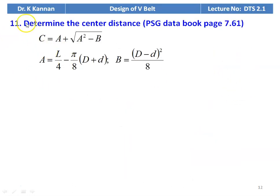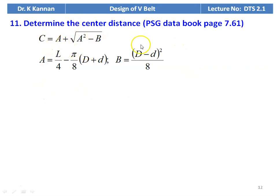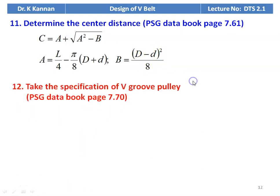Then determine the center distance. Refer to page number 7.61: C = A + √(A² − B), where A = L/4 − π/8 × (D + d) and B = (D − d)²/8.